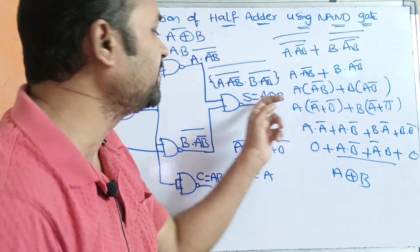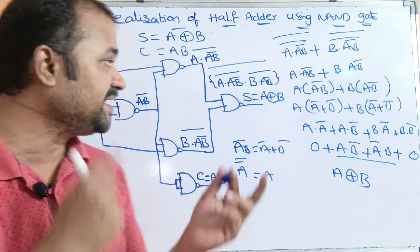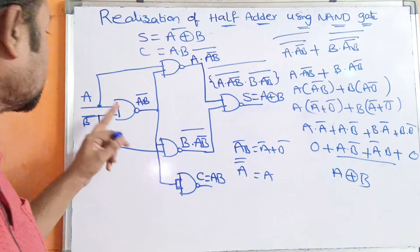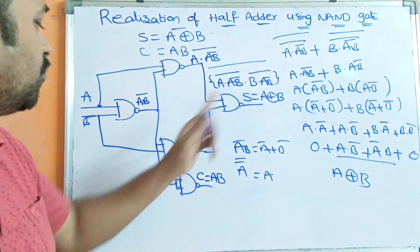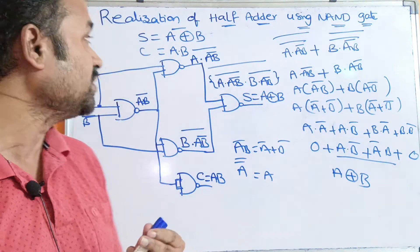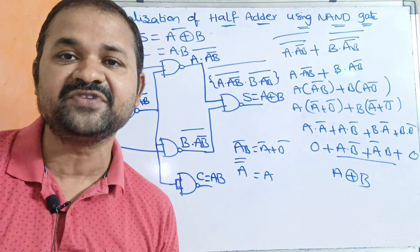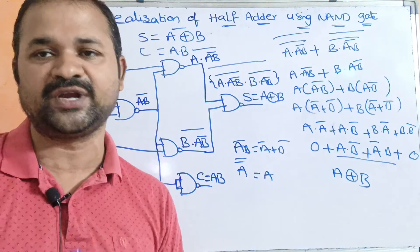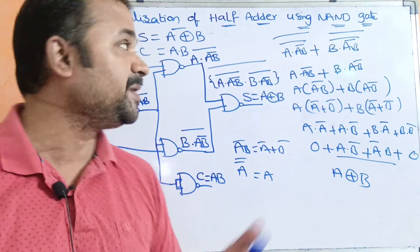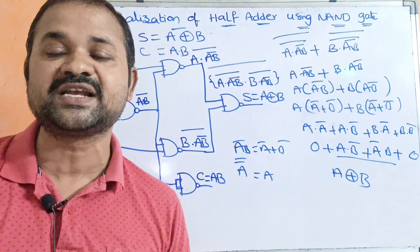So this is nothing but the sum. In total, five NAND gates are required to implement the half-adder. In this way, we can implement the half-adder with the help of NAND gates only. In the next video, we will see how to implement the half-adder with the help of another universal gate called the NOR gate.